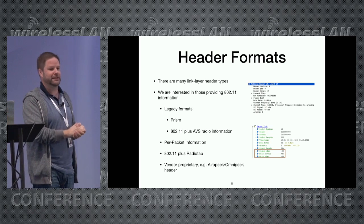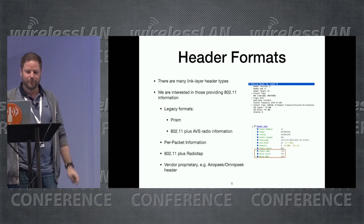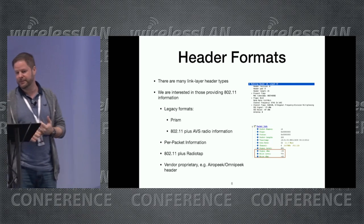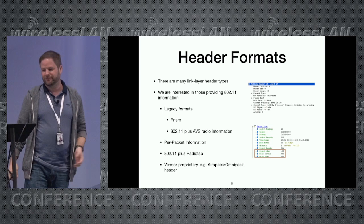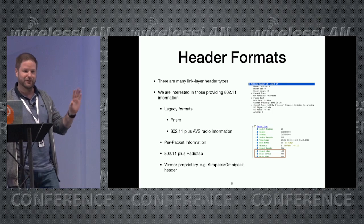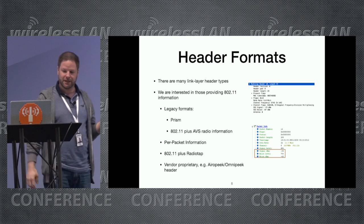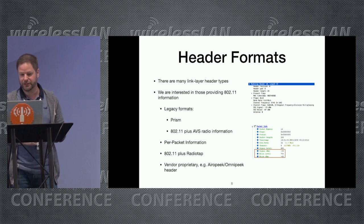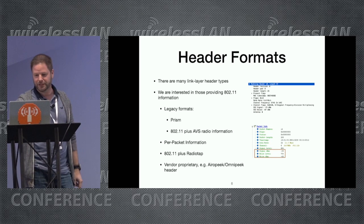There are many header formats. Radiotap is the most common one. Back some years ago we had prism, 802.11 plus AVS radio information — you don't really see these anymore, only if you're working with very old drivers. Then we have per packet information (PPI), radiotap which is one of the most common ones, and some vendor-proprietary formats like the header format used by Omnipeek software, which has its own pseudo header for captured frames.